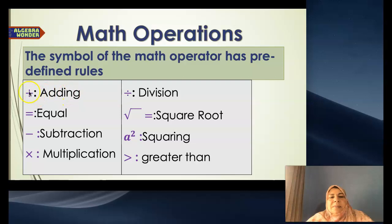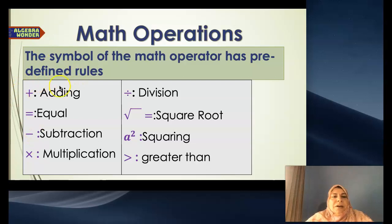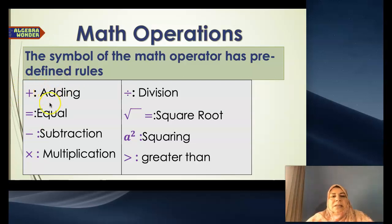For example, the plus symbol means adding. Mathematicians define that. If you have 3 apples and then this sign and 2 apples, that means we are getting the sum, which is 5 apples.